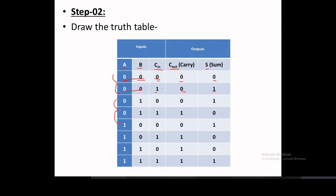For the next two conditions with A=0, B=1: carry can be zero or one. For zero, one, zero: zero plus one plus zero gives sum=1, carry=0. For zero, one, one: zero plus one plus one gives sum=0, carry=1. For A=1, B=0, carry=0: one plus zero plus zero gives sum=1, carry=0. For A=1, B=0, carry=1: one plus zero plus one gives sum=0, carry=1.